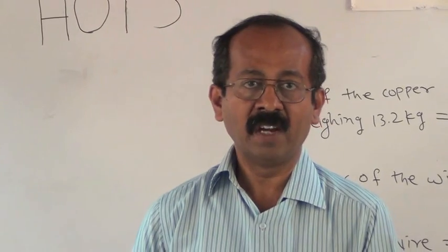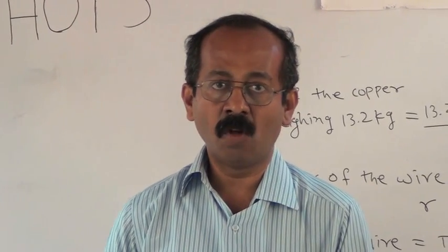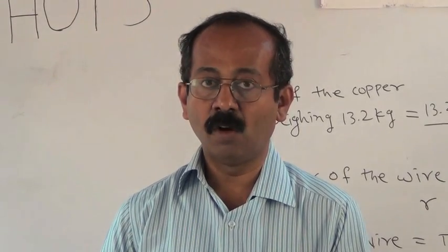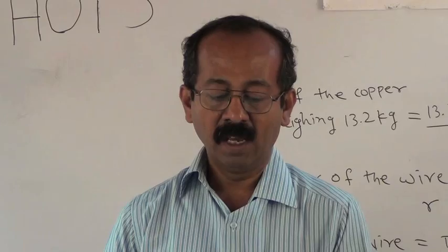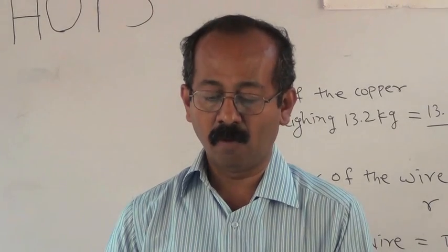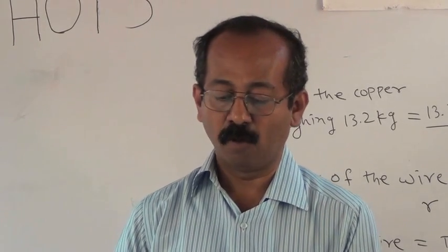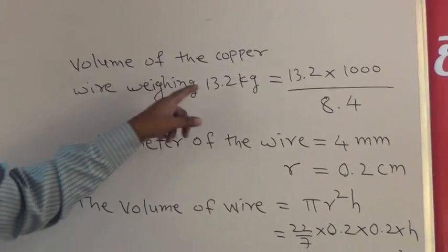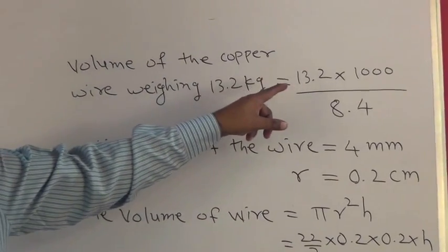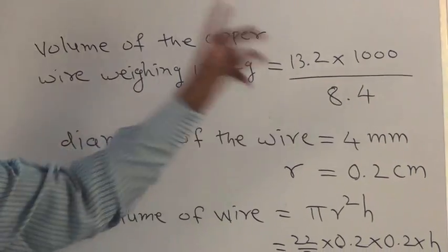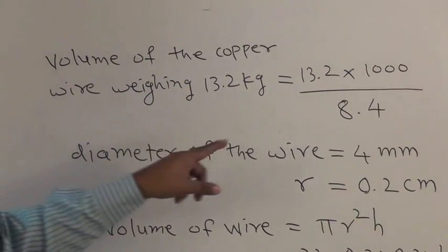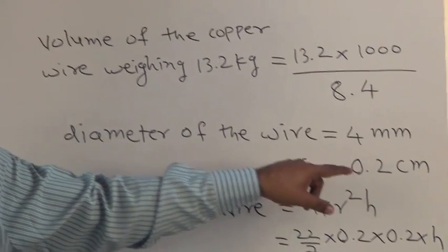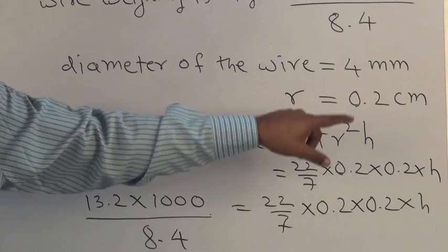Students, we are discussing the last example. This example is based on mensuration. Find the length of 13.2 kg of copper wire of diameter 4 millimeter, if 1 cubic centimeter of copper wire weighs 8.4 grams. Now volume of the copper wire weighing 13.2 kg is equal to (13.2 × 1000)/8.4. Diameter of wire is 4 millimeter, so radius is 0.2 centimeter. Now radius is converted from millimeter to centimeter.